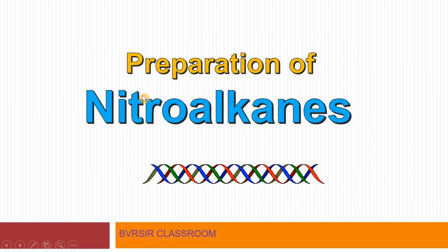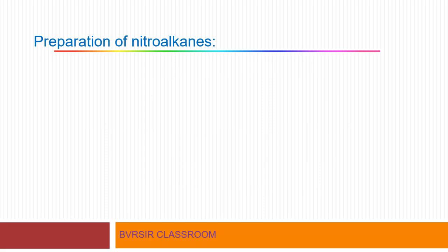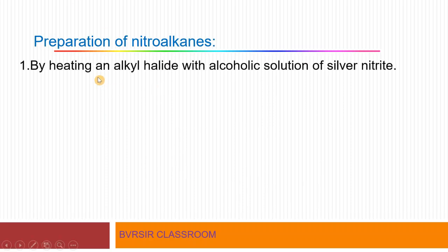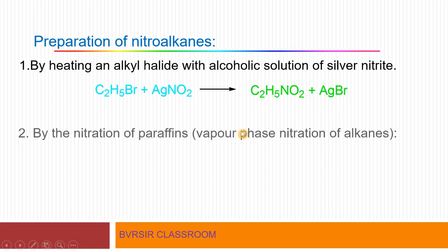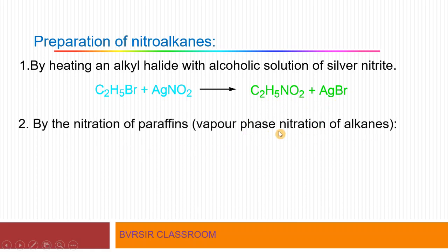Now let us take up the preparations of nitroalkanes step by step. The first method is by heating an alkyl halide with an alcoholic solution of silver nitrite. This is a straightforward, simple reaction: C2H5Br (alkyl halide) reacts with AgNO2 (alcoholic solution of silver nitrite) to give C2H5NO2 (nitroethane) plus AgBr.